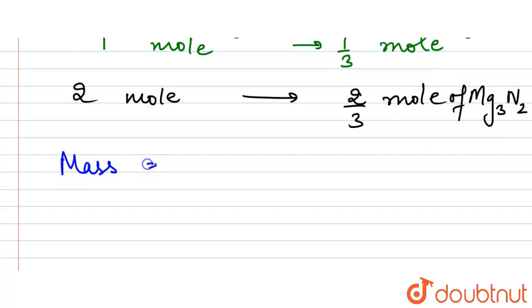Now we need to calculate the mass. The mass is equal to moles, which are 2 upon 3, into the molecular weight, which is 100. So here we got the answer: 200 upon 3 grams.